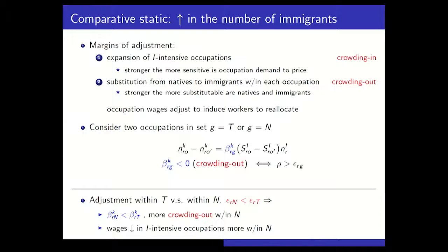In terms of wages, wages move proportionally with allocations. Wages fall by more in immigrant-intensive occupations within non-tradable occupations than within tradable occupations. That is, workers starting in an immigrant-intensive occupation lose more—or gain less—within the set of non-tradable than within tradable occupations. We'll estimate these betas and use those estimates to guide parameterization of a richer quantitative model.